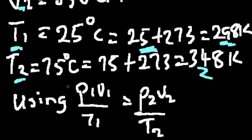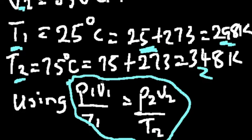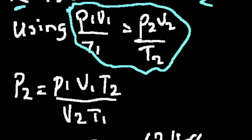So, we are going to be using the combined gas law to solve this problem. We have P1V1 over T1 equals P2V2 over T2.